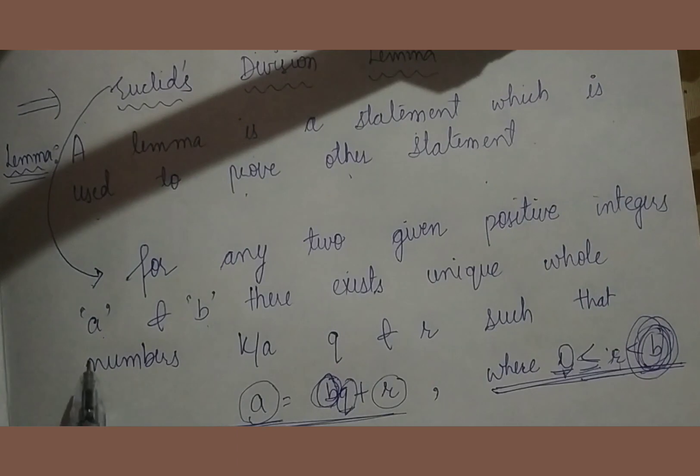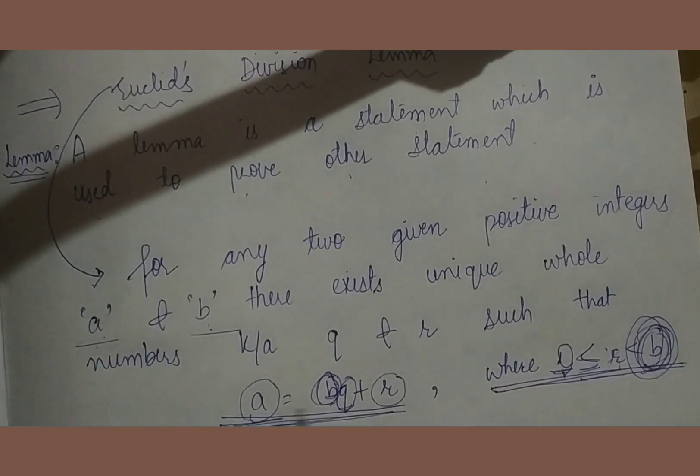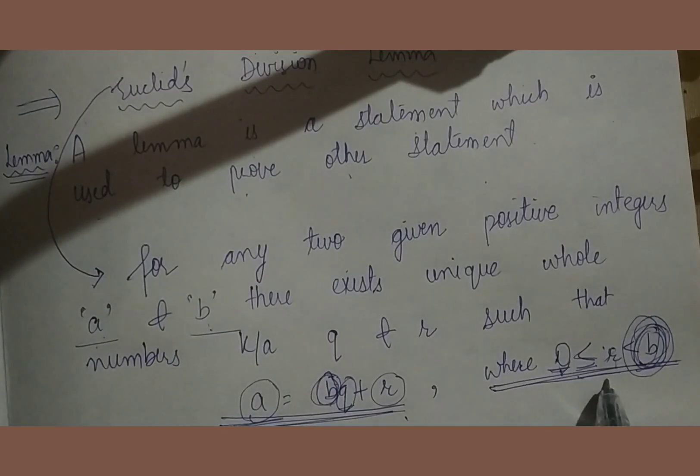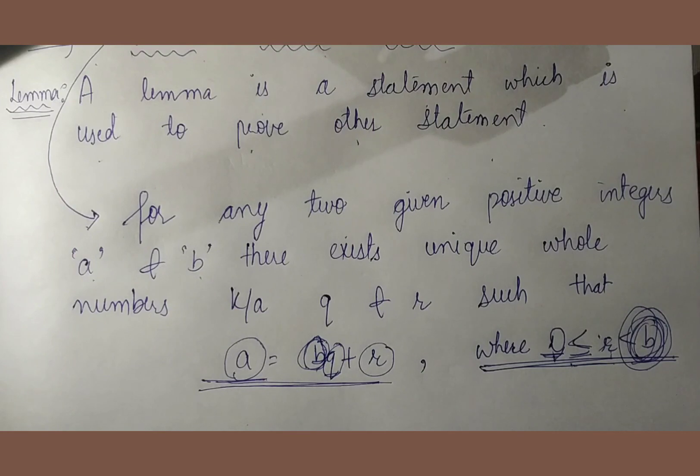If we take two positive integers, a or b, where a is greater than b, then we will find the relation a equal to bq plus r, where r is greater than or equal to 0 and less than b. This is all in Euclid's Division Lemma.